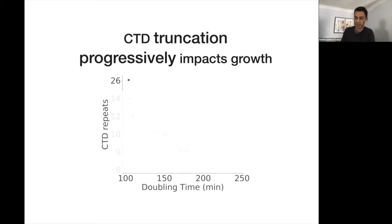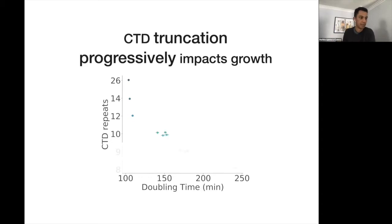One of the first experiments I did to address this question was simply to measure growth rate in CTD truncation mutants. The wild type, which has 26 CTD repeats, doubles roughly every 100 minutes. Going from 26 to 14 repeats grows a little slower, then 12 a little slower, and suddenly at 10 the growth phenotype becomes dramatically stronger, only increasing further at 9 and 8. There is a progressive increase in the magnitude of the growth phenotype as you go down CTD length.